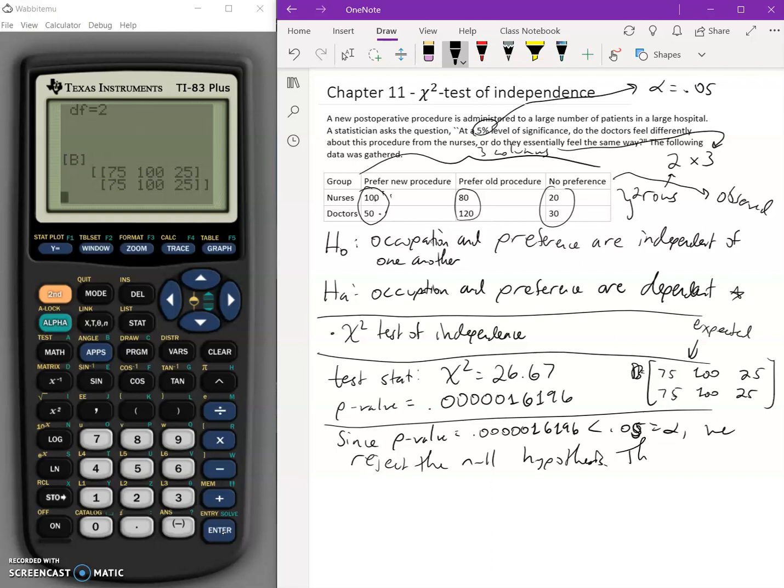There is sufficient evidence to believe the preference of procedure is dependent on the occupation. So we think there is some dependence taking place here. So there we go. That's the chi-square test of independence. That is when we use the actual chi-square test within our stats options on the calculator. Thank you.